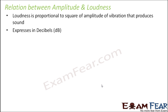Now that we have discussed amplitude and wavelength — amplitude and loudness are very closely related to each other. Greater the amplitude, greater would be the loudness; they are directly proportional. More precisely, loudness is proportional to the square of amplitude of the vibration that produces the sound. So if your amplitude becomes double, your loudness will become four times. If your amplitude becomes three times, the loudness will increase by nine times. So even a small increase in amplitude causes a large increase in loudness.